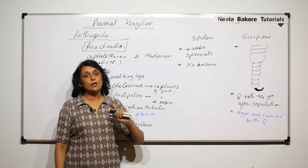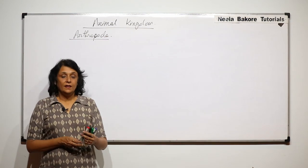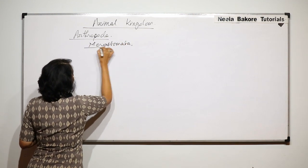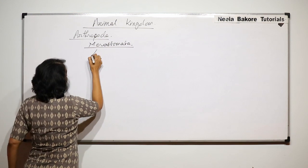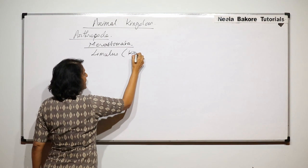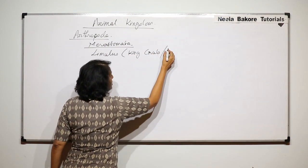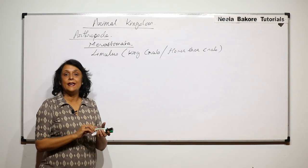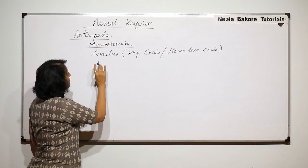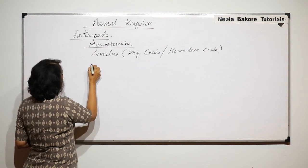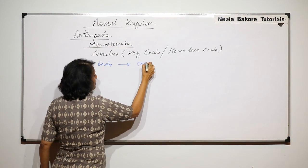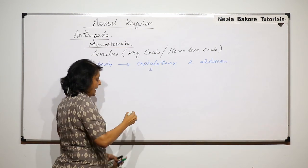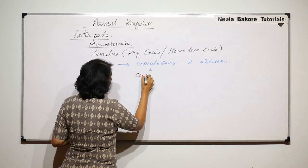The last class of phylum Arthropoda is Merostomata. A very interesting example is Limulus, also known as king crab or horseshoe crab. It is called horseshoe crab because of the shape of its carapace. In Merostomata, the body is divisible into cephalothorax and abdomen, and the cephalothorax is covered with a horseshoe-shaped carapace.